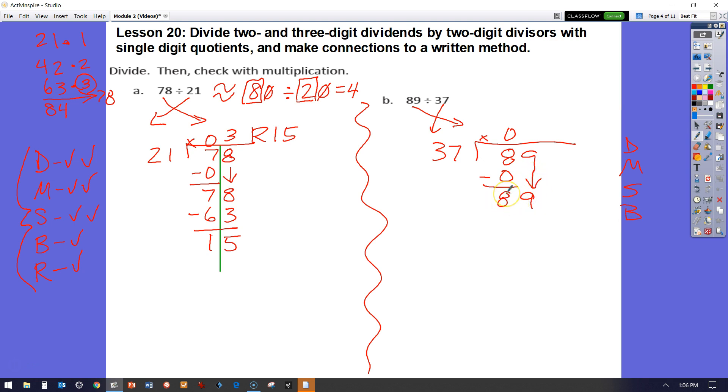Now I have 89 divided by 37. Let's list our multiples of 37. I know it is 37. 37 times 2 would be 74. 37 times 3 is 111. I know that 89 is going to fall between 74 and 111. So this was times 1, this was times 2. I know the number is going to be 2.